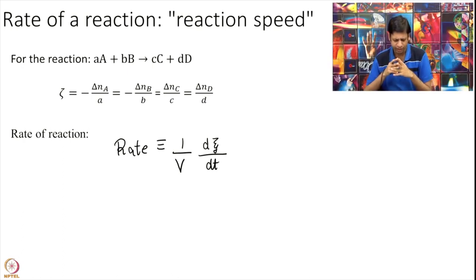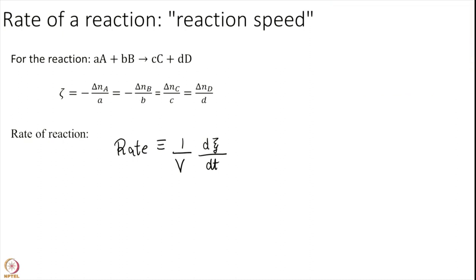Some of you might be curious why we divide by volume? A little bit of extra information. It is just so that the rate becomes an intensive variable. We do not want it to depend on the overall volume. Nonetheless, let us just put it in this equation here. Let us substitute it. So I will substitute it for A. So rate is equal to 1 over volume d over dt of minus delta N A over a. So I have used this here. So I will take a outside.